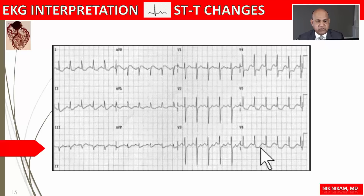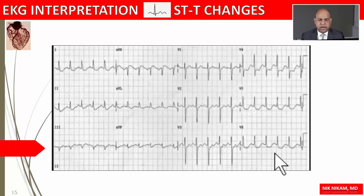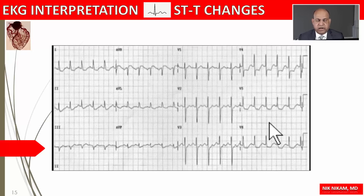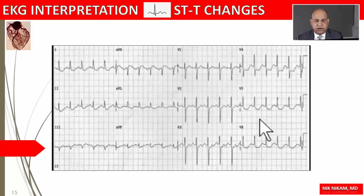This is an independent finding not related to bundle branch block or left ventricular hypertrophy. When we see these changes in leads not related to hypertrophy or conduction disturbances, this represents myocardial ischemia, and in the presence of elevated cardiac enzymes it represents non-transmural MI or NSTEMI. These are the types of changes expected in patients undergoing treadmill exercise testing. For a treadmill exercise test to be positive, we'd like to see horizontal ST depression greater than 1.5 millimeters at peak exercise.